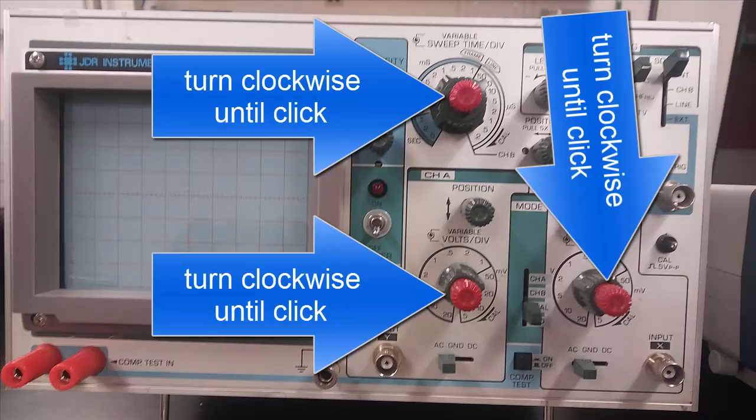There are three red knobs on top of three green knobs. Turn the red knob and adjust the red knob all the way clockwise until it clicks. If you don't do this, none of your measurements will be correct.